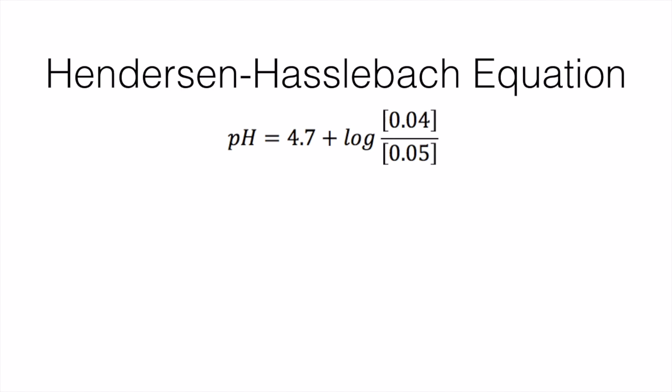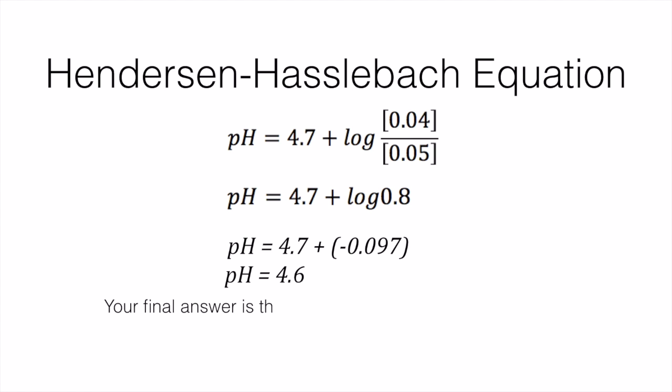So the equation changes into pH equals 4.7 plus log of 0.04 divided by 0.05. Dividing 0.04 by 0.05 will give you 0.8. Log 0.8 gives you minus 0.097. Rounding off that number, you will get minus 0.1. So your final answer will be pH equals 4.6.